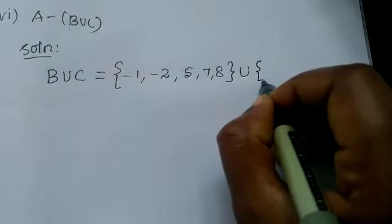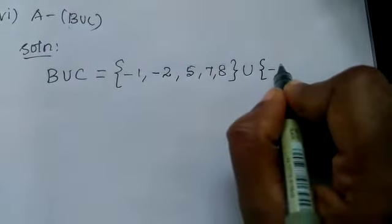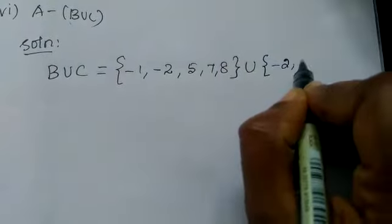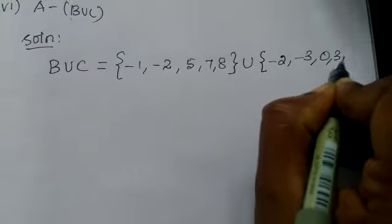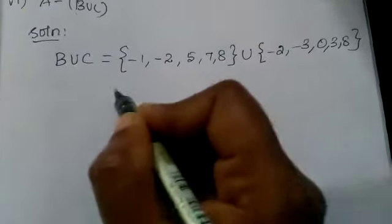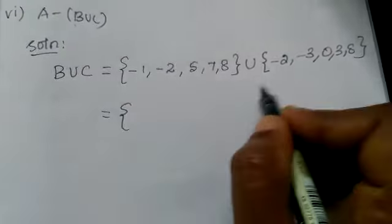Now C value is what? Minus 2, minus 3, 0, 3, 8.